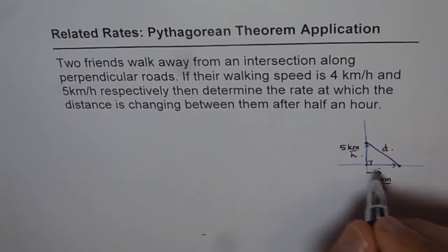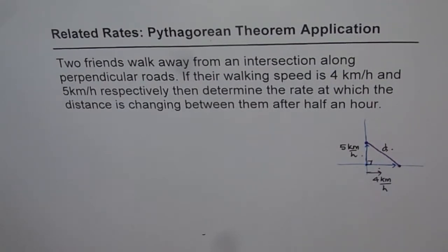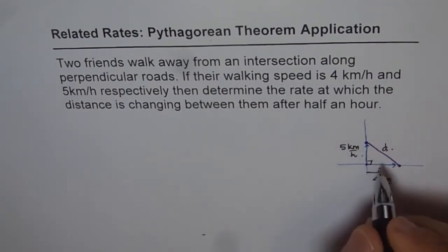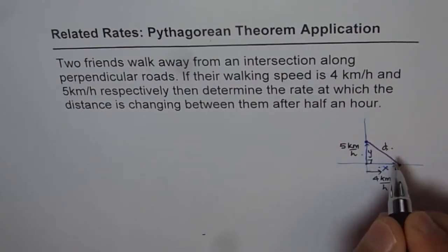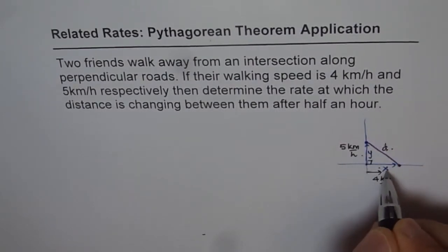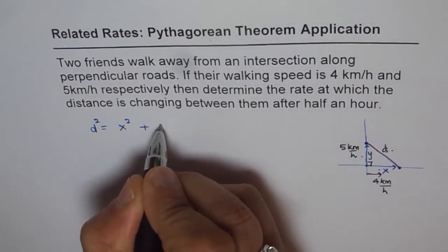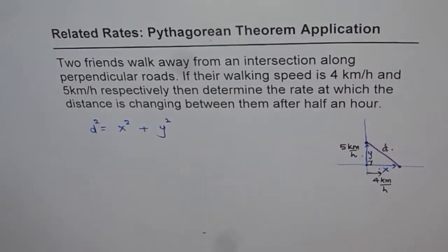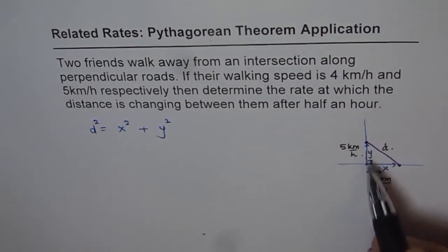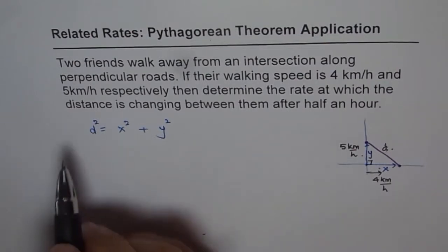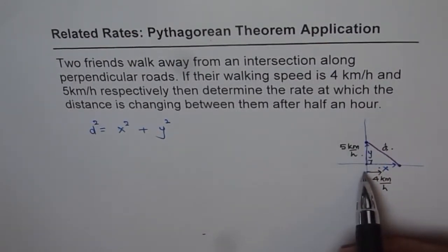So what we can say is, at any instance, let this be x in this triangle and let this be y. Then how is distance related with x and y? So we know distance squared equals to x squared plus y squared. That is how distance is related with these two variables in a right triangle. We will give you a very simple, straightforward solution, which is general, and then we will plug in the values.